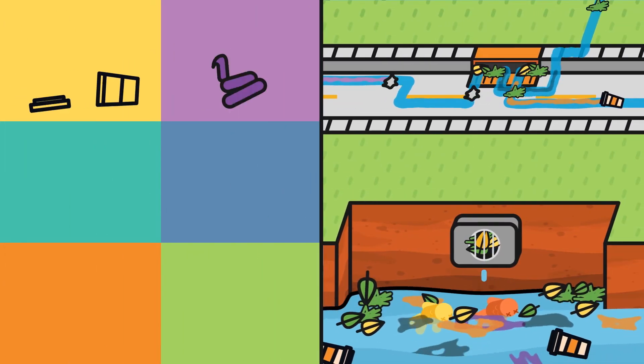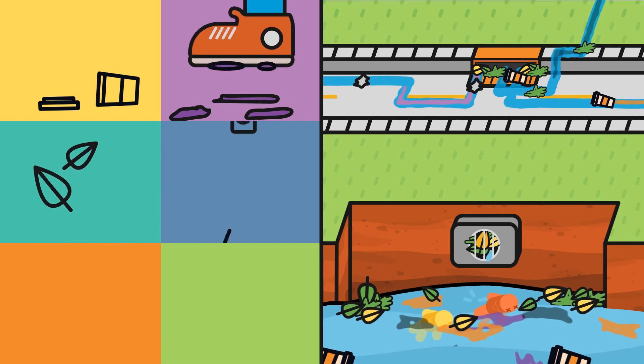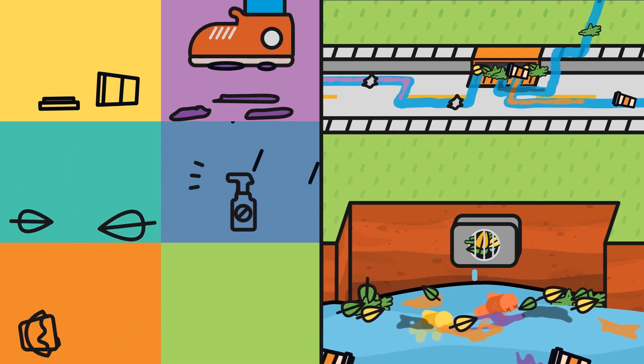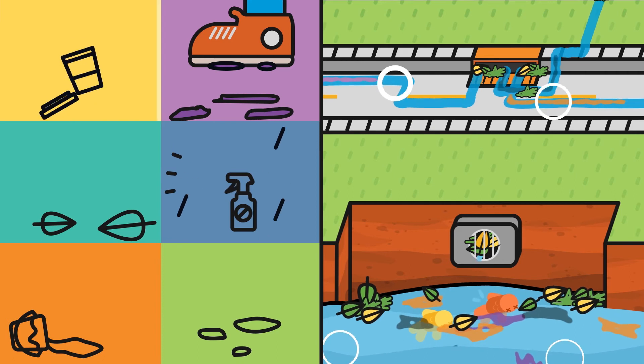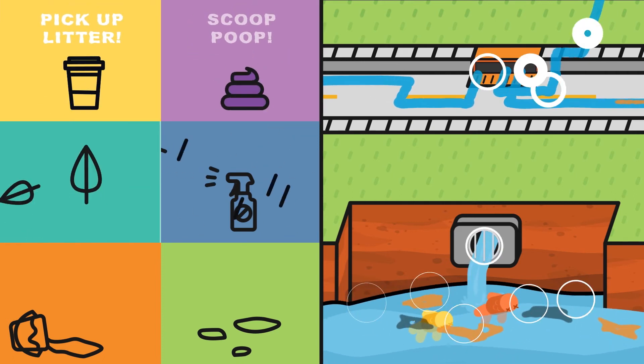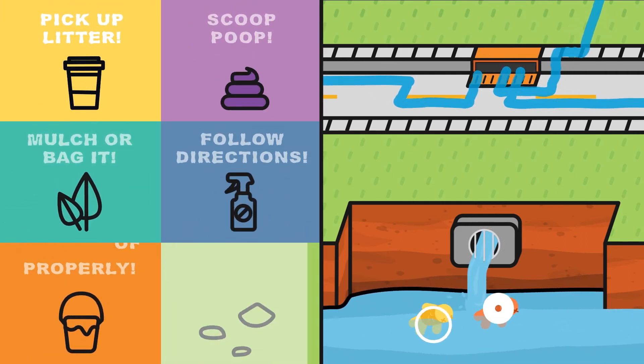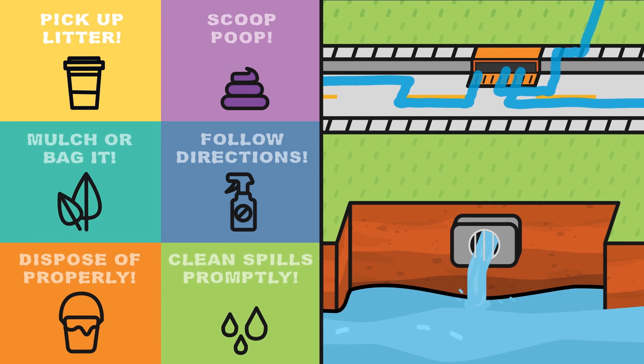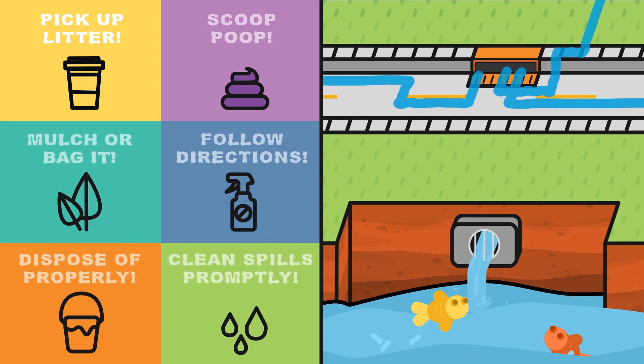So, to sum it all up, polluted stormwater can make our waters toxic and unsafe. But if each of us makes some small changes, we can prevent stormwater pollution and make sure our waters are clean and our environment is healthy for all of us.